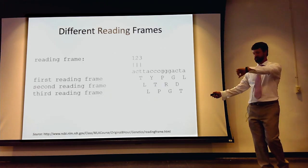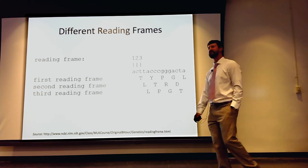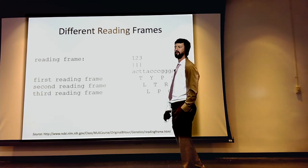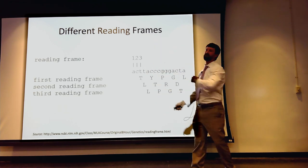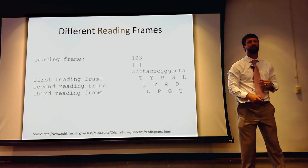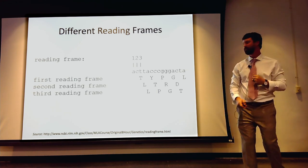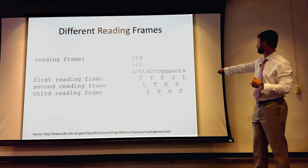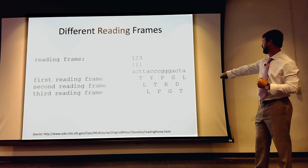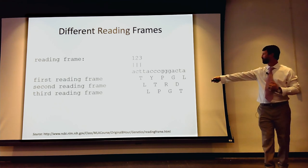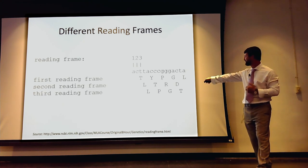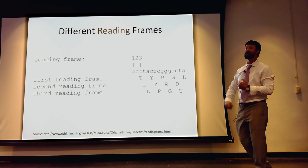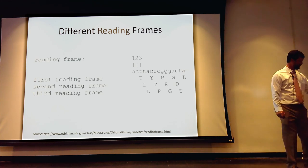Reading frames: how many nucleotides do I need to encode for an amino acid? Three. So ACT encodes an amino acid, and from a string you can read it as ACT, CTT, TTA — it depends where it gets fed into the molecular machine. A reading frame is which three nucleotides we're reading — and it matters where you start.